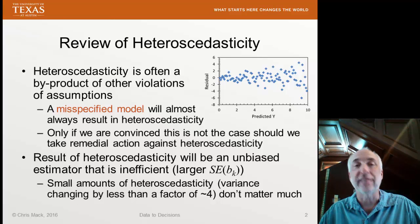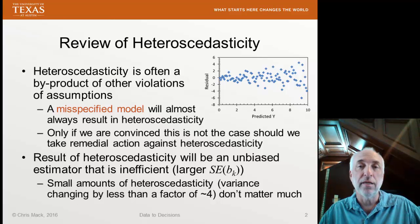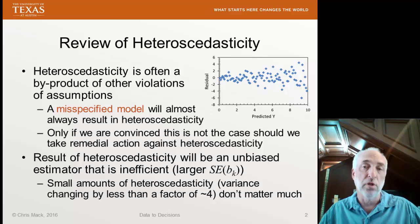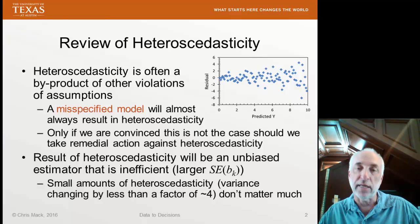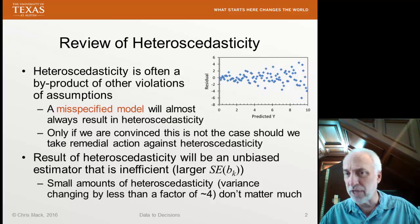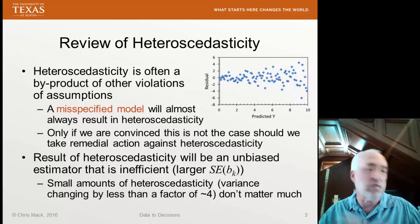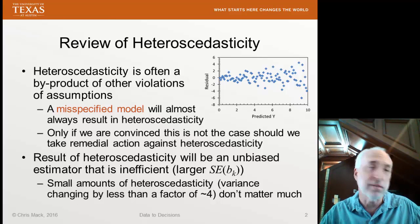That said, it takes a reasonable amount of heteroscedasticity before you run into problems. The rule of thumb I like to use is that the standard deviation of the residuals needs to change by at least a factor of two across the range of x values or predicted y values before you need to worry too much about it. In other words, the variance has to be changing by a factor of four or more. If you see a little bit of change, don't worry about it — you'll lose a little bit of efficiency, but it's not enough to justify anything you might do to try to fix it. If the variance is changing by a factor of four or more, then you need to do something about it.